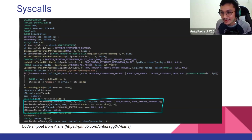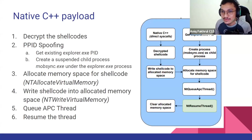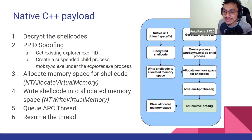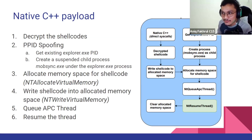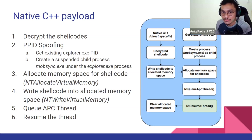Let's move on to the native C++ payload that Sharpener can generate. The PE payload first decrypts the shellcode.